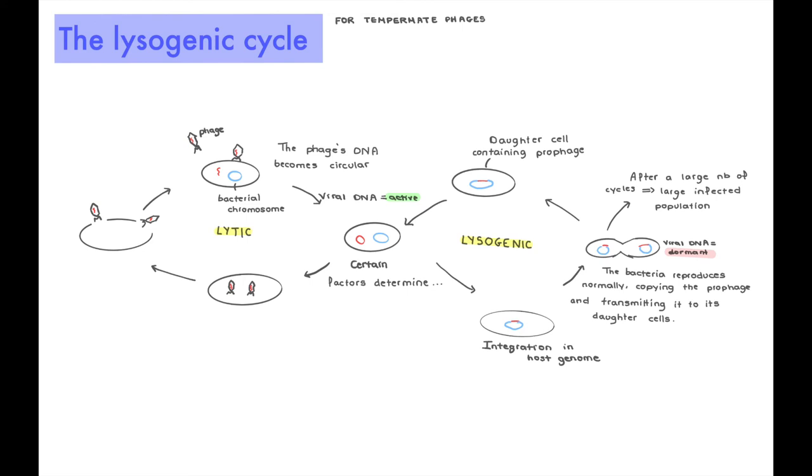And why does it do this? Because the bacteria, who doesn't notice, is going to reproduce normally, copying what we call prophage, which is the phage that is inside the genome of the host, and transmitting it to its daughter cells. So we're going to have a huge replication of bacteria. And with each bacterial replication, the phage is going to be reproduced. So this is another way of replicating the virus, except this time it's going to be done without directly destroying the cell.